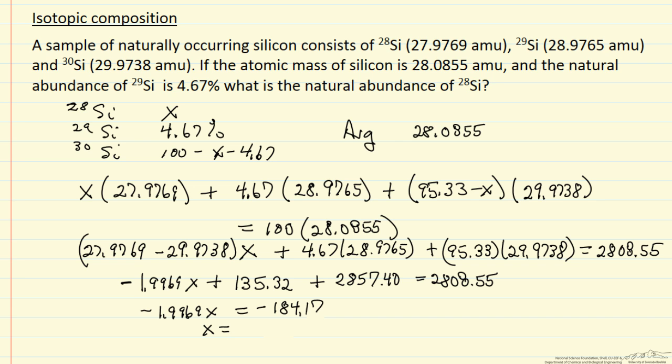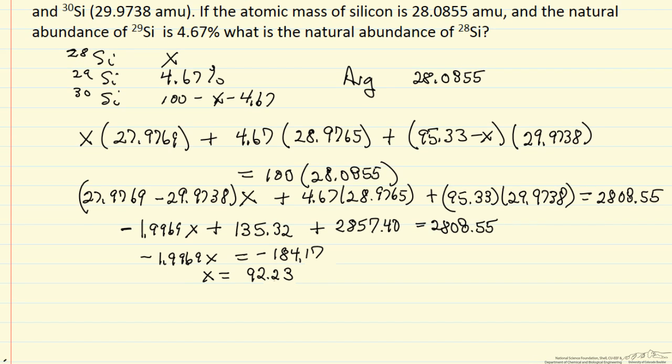Solving for x gives 92.23. I'm keeping four significant figures in this case, so 92.23% of the isotope mixture is silicon-28.